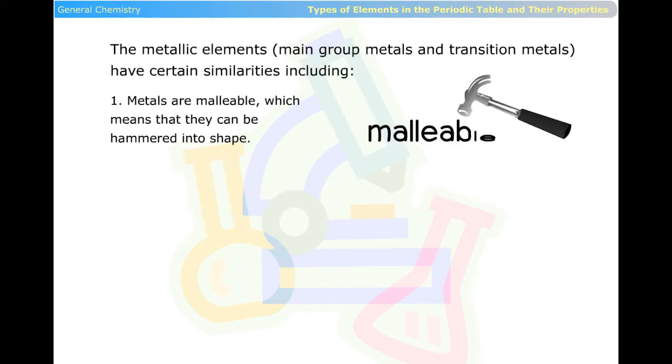The metallic elements, main group metals and transition metals, have certain similarities, including metals are malleable, which means that they can be hammered into shape.